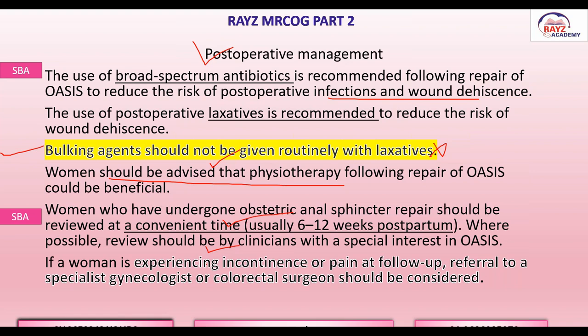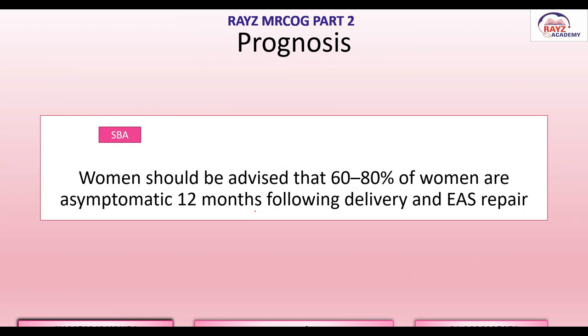If at the time of follow-up the woman is still experiencing incontinence or pain, referral should be considered to a specialist gynecologist or colorectal surgeon, who will perform endoanal pressure studies. The guideline states that 60 to 80% of women become asymptomatic by the end of 12 months following delivery — this is a very important number.